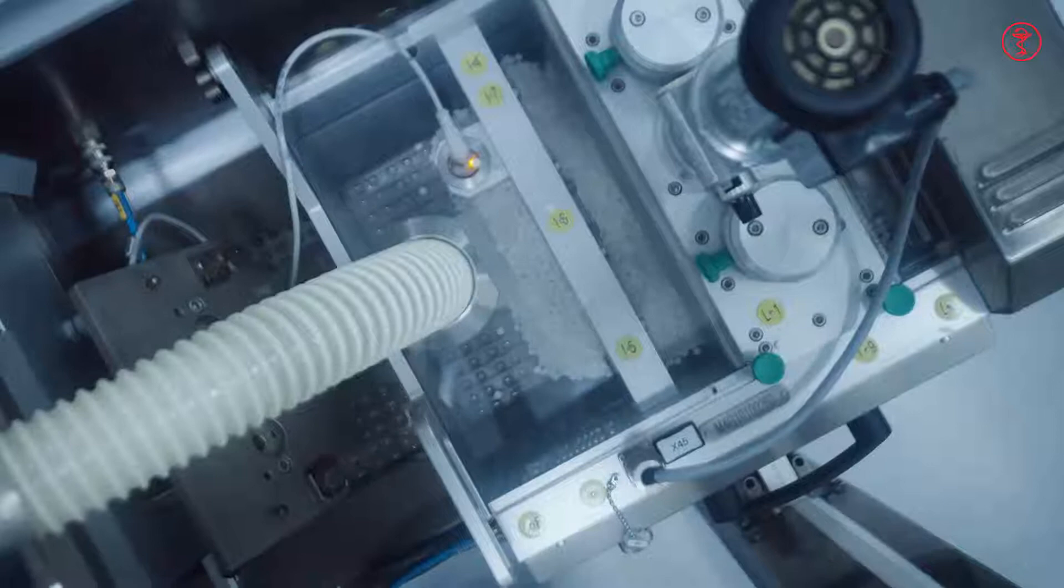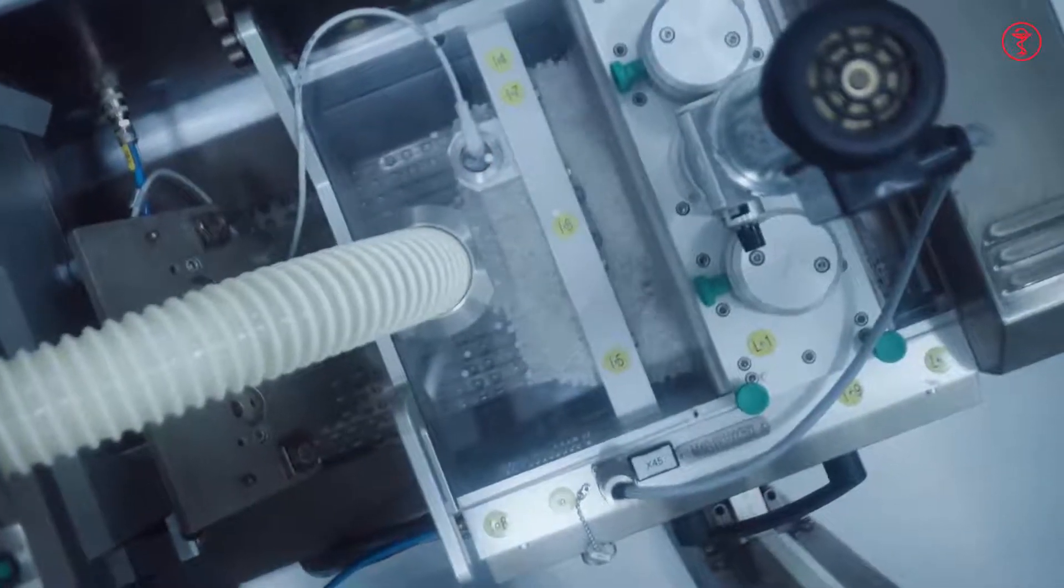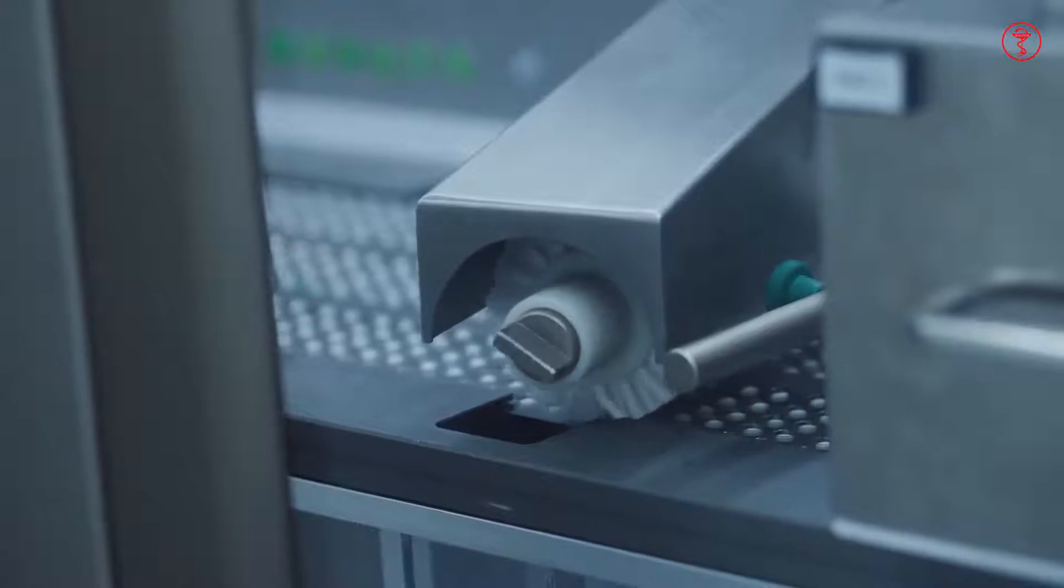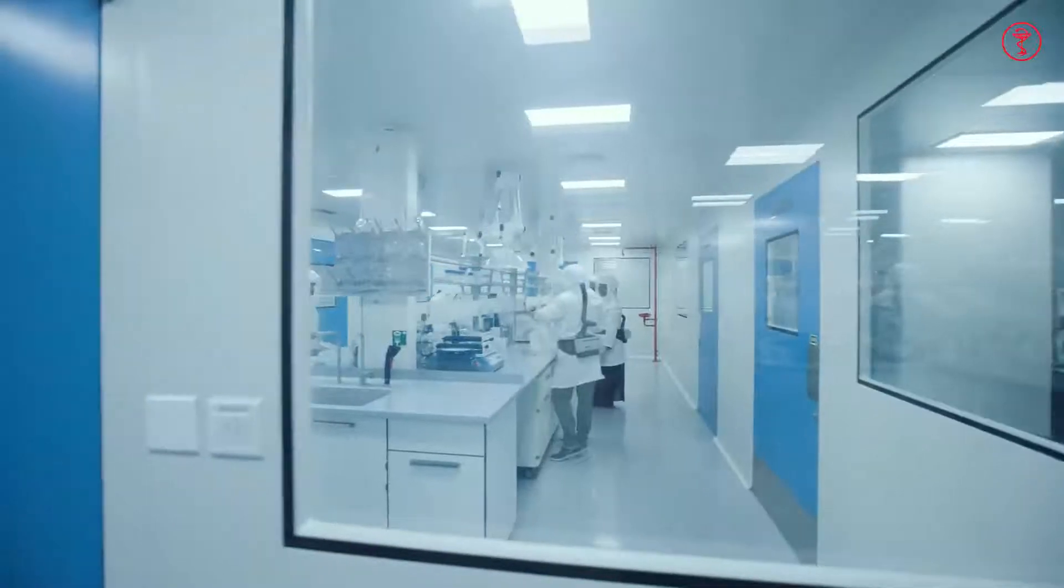The blister machine collects the compressed and coated tablets. As the pocket belt rolls on, an integrated camera inspection system detects defective blisters, and the rest are collected as high-perfection products.